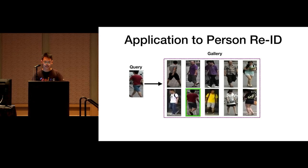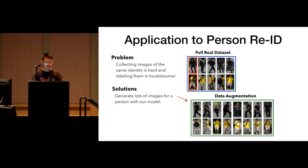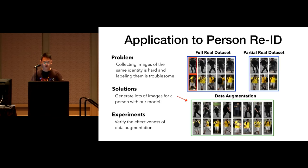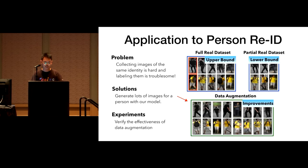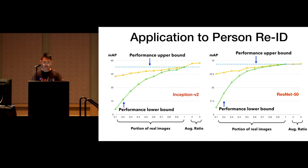Besides better performance, our model is faster and has fewer parameters compared to other methods. An important application is person re-identification, where the task is to search images containing the same person from a large image gallery. It's hard to collect and label data, so we could generate a lot of data. We prove in our paper that when data amount is insufficient, our generated images could be quite helpful — the performance gain with respect to the lower bound is mainly achieved by generated images. The less real data available, the higher the performance improvement.